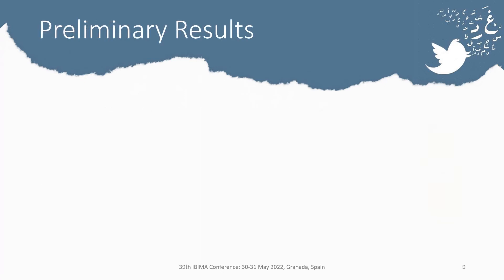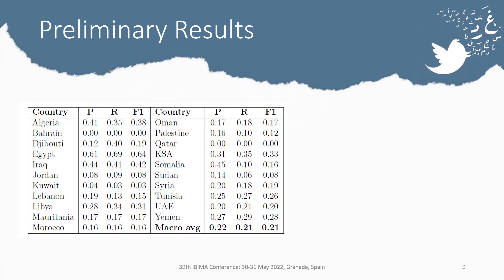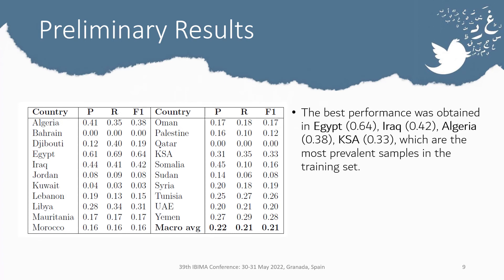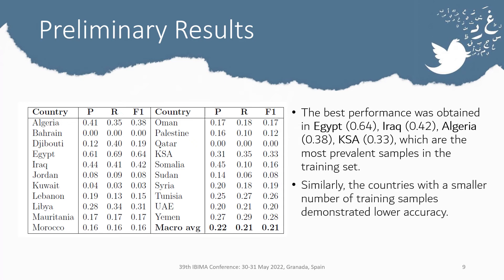Here are our preliminary results based on the country-level challenge. The best performance was obtained for Egypt, then Iraq, then Algeria, then Saudi Arabia — which are the most prevalent samples in the training sets. Similarly, countries with a smaller number of training samples demonstrated lower accuracy, and the best results were on the development set.